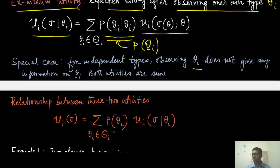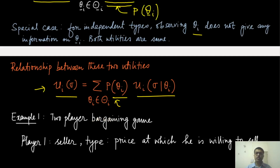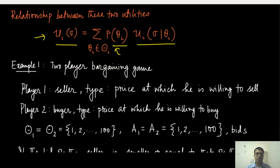Otherwise, there is a very obvious relationship between these two utilities. This is the ex-ante utility and this is the interim utility for player i. All that you need to do is take the expectation with respect to theta_i to get the ex-ante utility. Let us look at some examples to explain the idea of this Bayesian game.